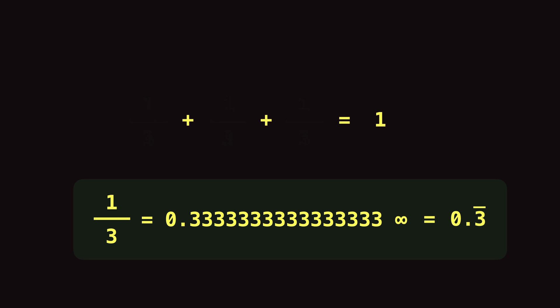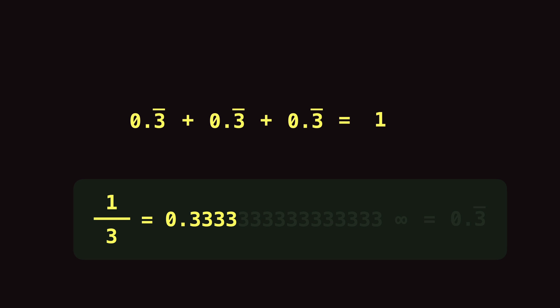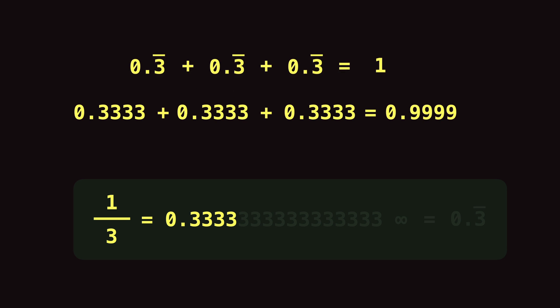So now we can rewrite our statement with 0.3 recurring. Let's say for a minute that we humans were not capable of identifying an infinite sequence of numbers, so we could only count to four digits after the decimal place: 0.3333, and no further. In this case, if we rewrite our statement with 0.3333 three times, the result is not going to be one — it is going to be 0.9999.